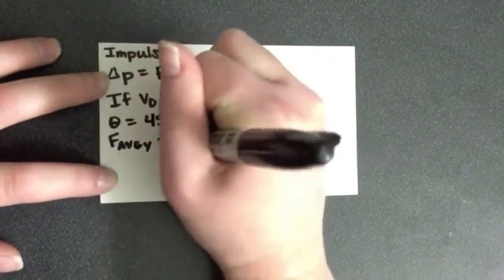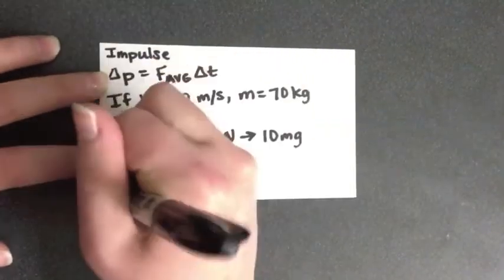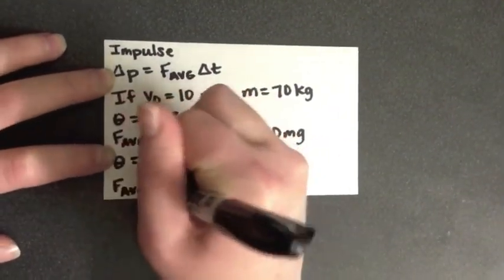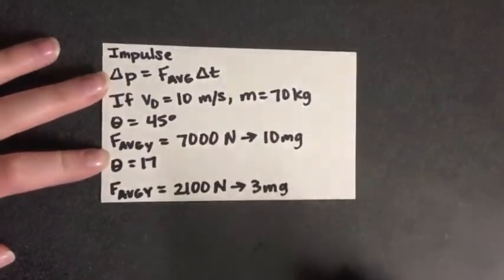For a more realistic measure, the athlete only has to push off the ground with 3 times the force of their body weight to get an average force in the y direction of 2,100 newtons, which can be done at a 17 degree angle.